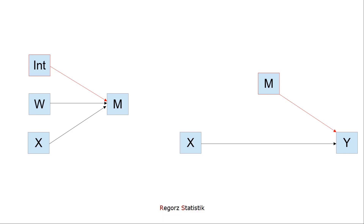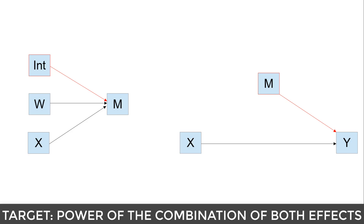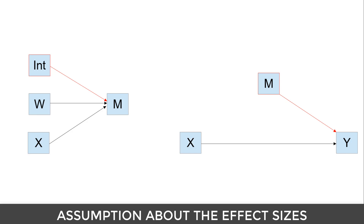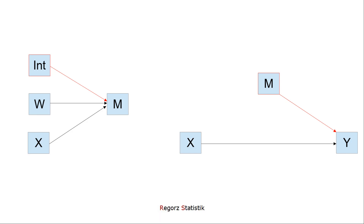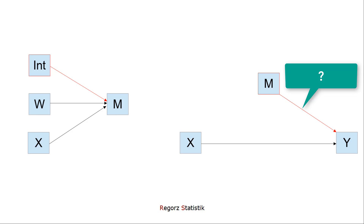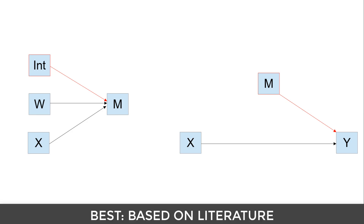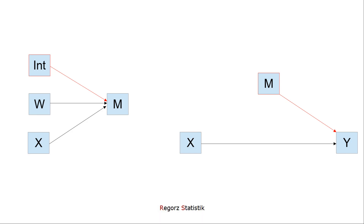It is a little bit more complicated here, because we are not interested in the power for the interaction or the power for the B-path individually, but the power for finding significant results for both those effects at the same time. In order to perform any power analysis, you need an assumption about the size of the effect you want to be able to find. In this case, you need two assumptions: one about the interaction for the A-path and a second assumption for the B-path. Ideally, you can base your calculations on effect sizes found in the literature; otherwise, you will have to make assumptions about those two effects.